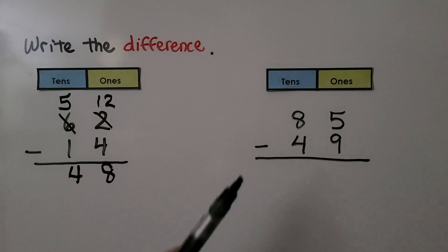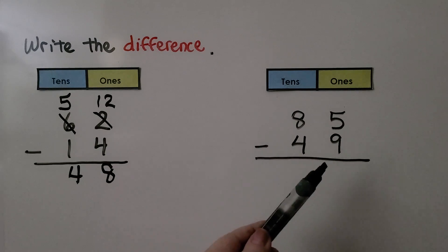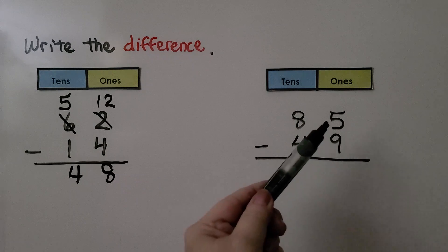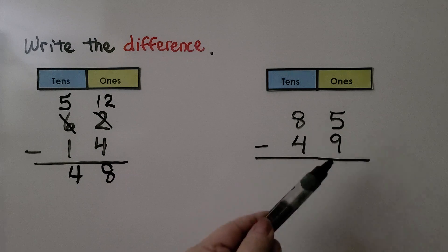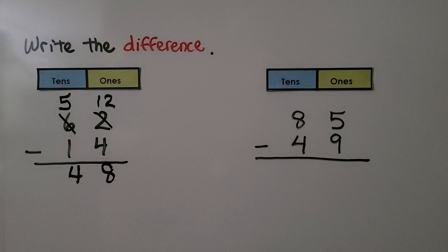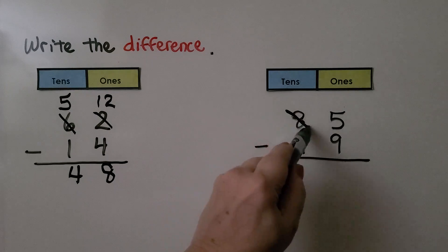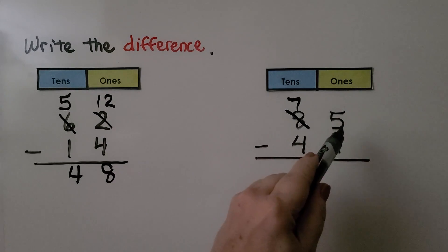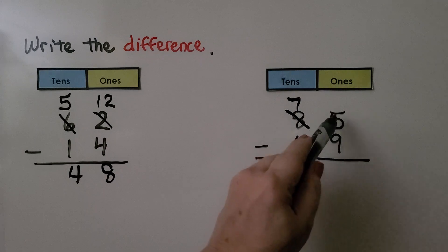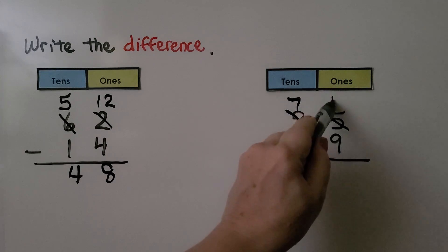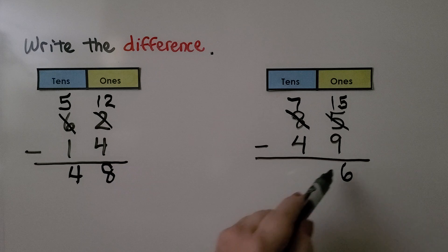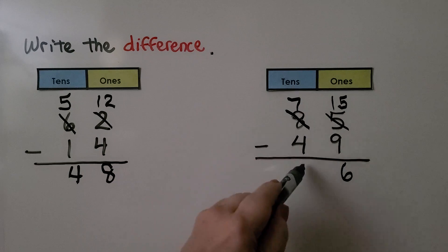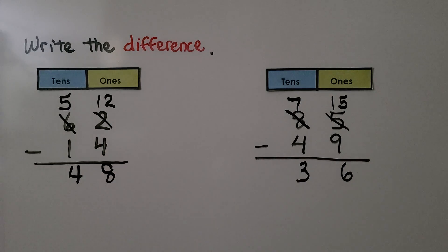Let's try it one more time. We have 85 minus 49. We look at the ones place and see we have a 5 in the minuend and a 9 in the subtrahend. We don't have enough ones to take 9 away from 5, so we need to regroup from the tens place — the 8 becomes a 7. We give 10 ones to the ones place, so instead of 5 ones we now have 15 ones. 15 minus 9 is equal to 6. 7 tens minus 4 tens is 3 tens. That means 85 minus 49 is equal to 36.